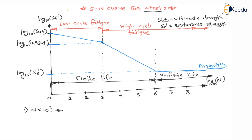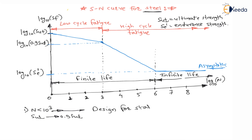During low cycle fatigue failure there will be plastic yielding at a localized area of the component. The strength decreases only from SUT to 0.9 SUT at 10³ revolutions — a very small decrease. Therefore, whenever a component fails in low cycle fatigue, design the component for static load only, not for fluctuating load.